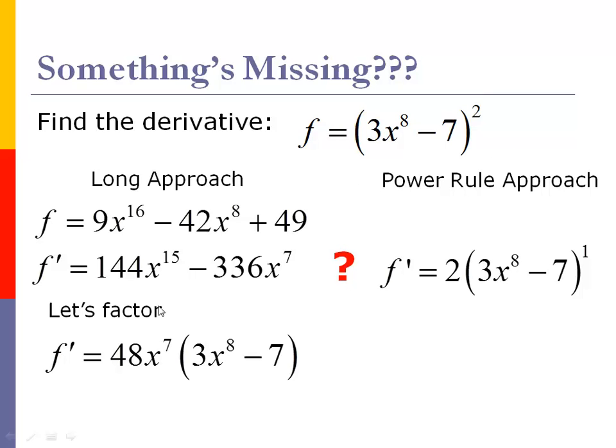So if I do that factoring over here, take out a 48x to the 7th, I get this 3x to the 8th minus 7. And I'm kind of like going, wait a minute, there's some similarities. So here's a 3x to the 8th minus 7, and here's a 3x to the 8th minus 7. So there are some similarities, but when we do the long way, I got a 48x to the 7th and I only got a 2 here.